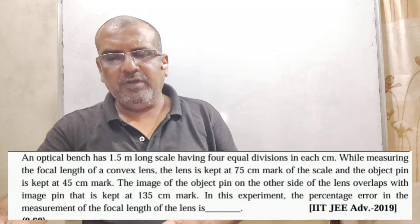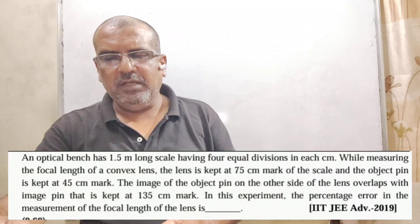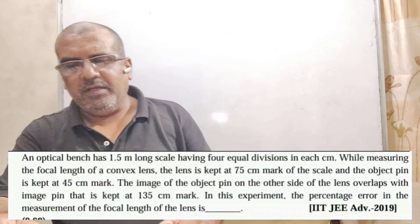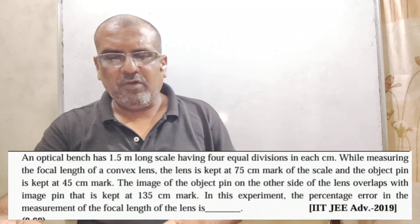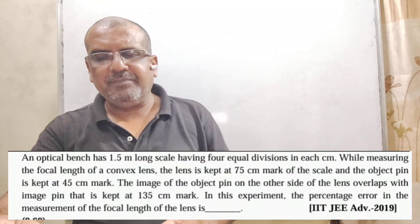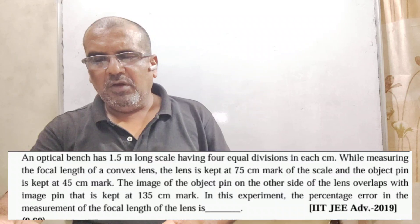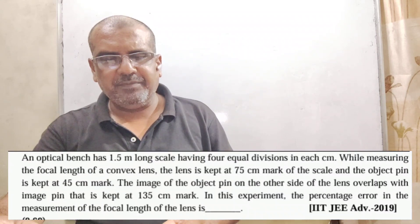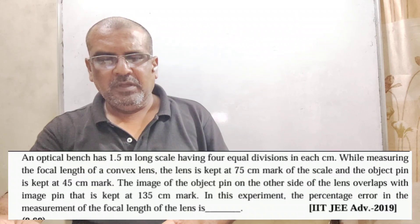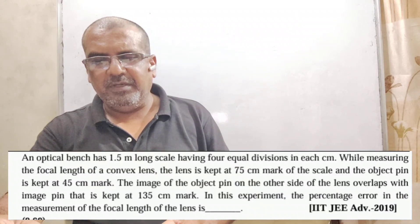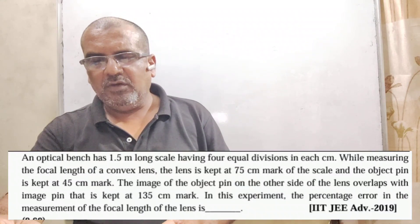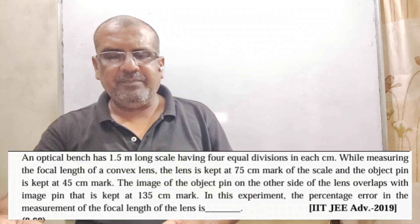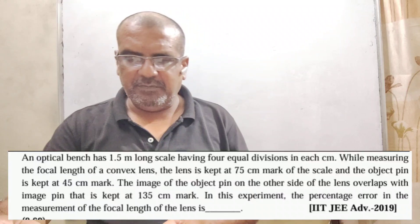Optical bench has 1.5 meter long scale having 4 equal divisions in each centimeter. While measuring the focal length of convex lens, the lens is kept at 75 centimeter mark of the scale and the object pin is kept at 45 centimeter mark. The image of the object pin on the other side of the lens overlaps with image pin that is kept at 135 centimeter mark.